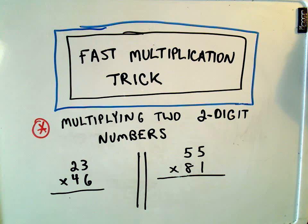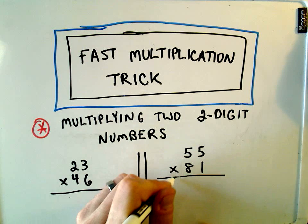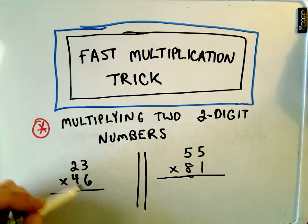In this video I want to show a fast multiplication trick for multiplying two two-digit numbers together. I just kind of made these two numbers up at random, so let's see how quick I can do them in my head.